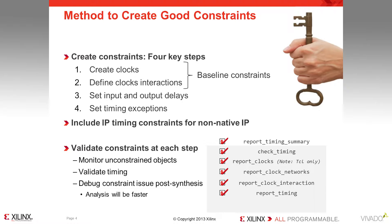IP cores that are added from the IP catalog often have constraints that come with them. These are automatically added to the design — the user doesn't have to do anything else. Older cores, however, that were generated in CoreGen typically do not have constraints embedded in the netlist. Users will want to review the CoreGen cores and add constraints for those cores as needed.